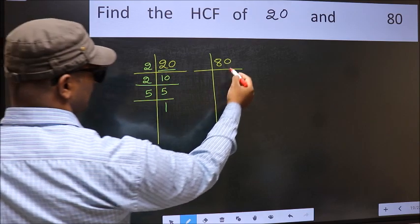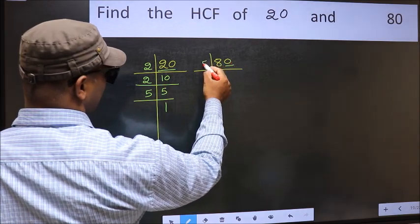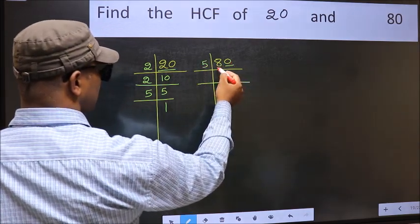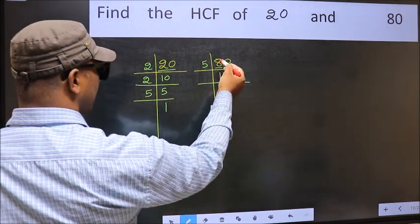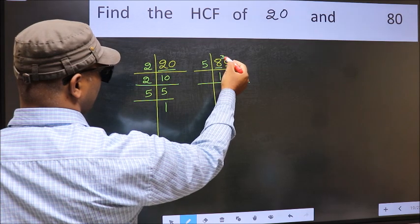Now the other number. Last digit 0, so take 5. First number 8. A number close to 8 in the 5 table is 5 ones is 5. 8 minus 5 is 3. Carry it forward, 30.